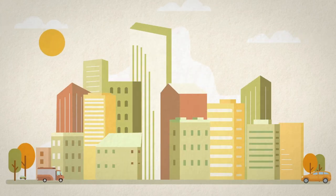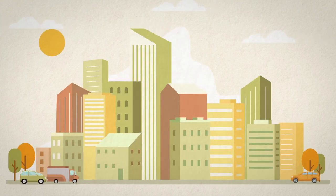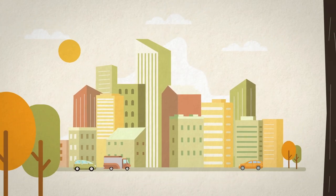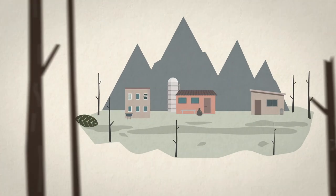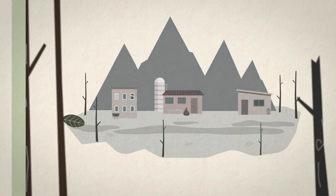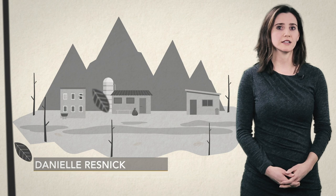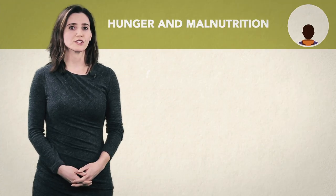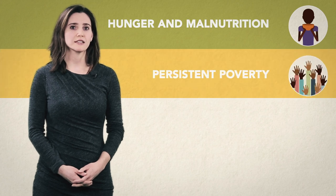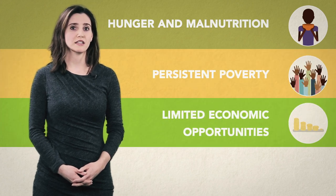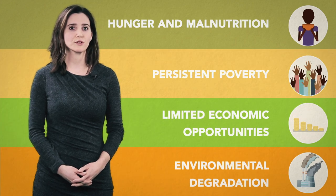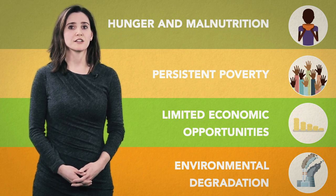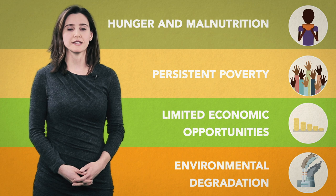The recent explosive growth of cities across the developing world has led to a shift in attention away from rural areas. Already long neglected, rural areas continue to fall further behind on many key development indicators. Deepening cycles of hunger and malnutrition, persistent poverty, limited economic opportunities, and environmental degradation are at crisis levels in many parts of the world and affect rural areas most keenly.